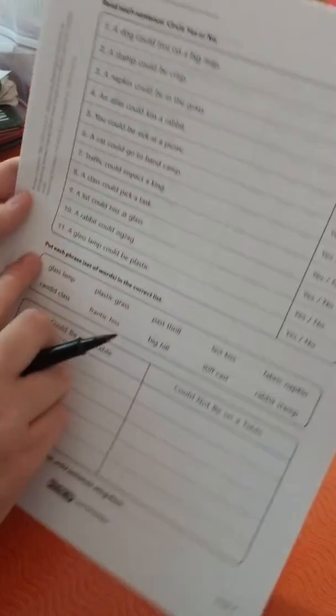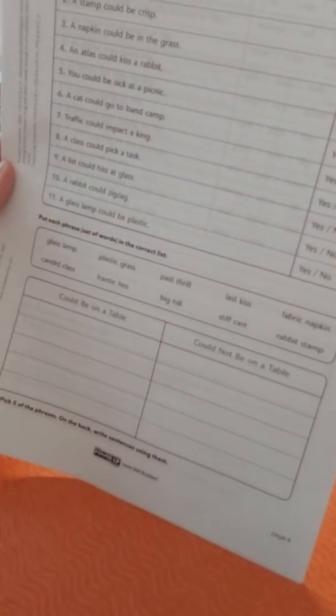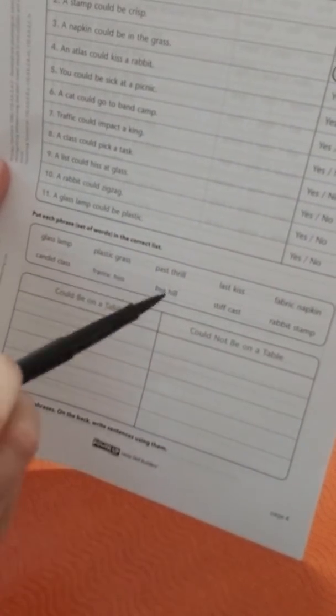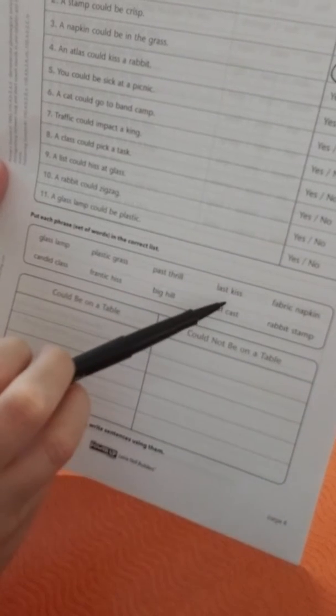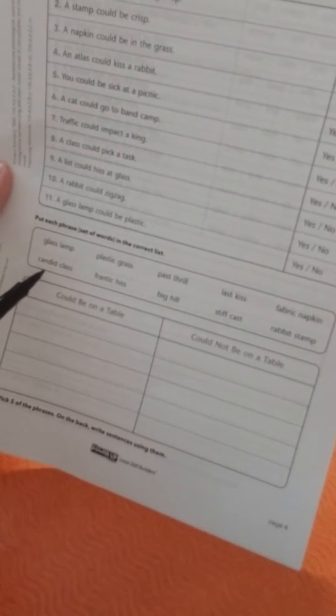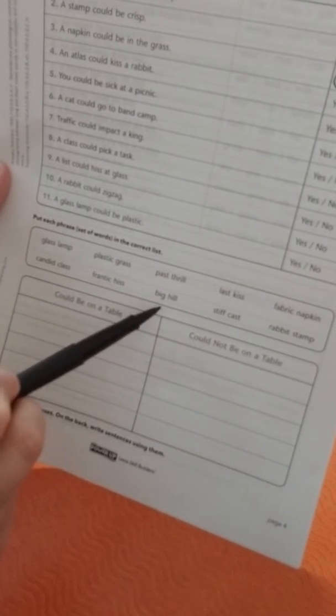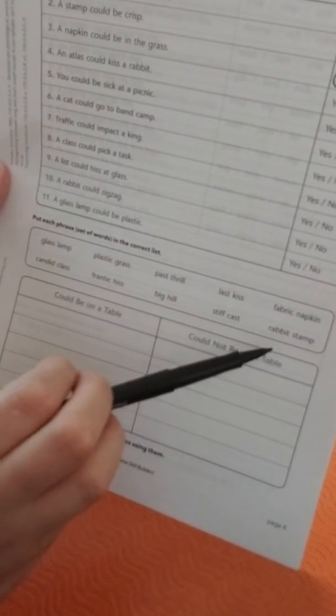Then you're going to come down here and it wants you to put each phrase or set of words on the correct list. So we have things like glass lamp, plastic grass, past thrill, last kiss, fabric napkin, candid class, frantic hiss, a big hill, stiff cast, rabbit stamp. We want to know if it could be on a table or it could not be on a table.